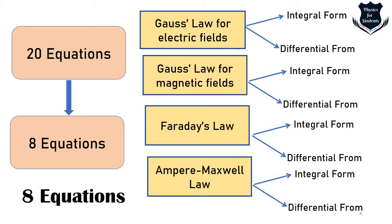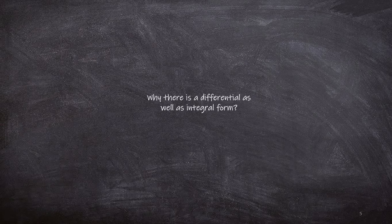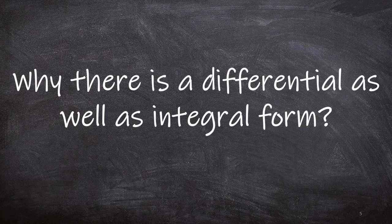The main study of this series is how to understand both the integral and differential forms. Maxwell originally wrote 20 equations, later improved by Oliver Heaviside into eight, which we study as four — each having a differential and integral form. A fundamental question that arises is: why does each equation have both forms?